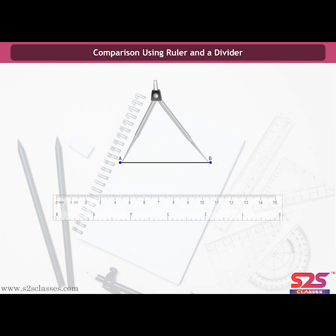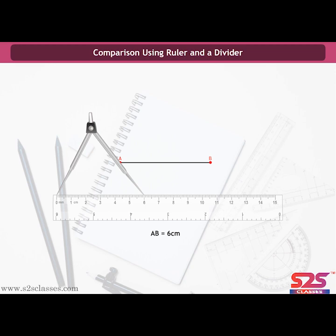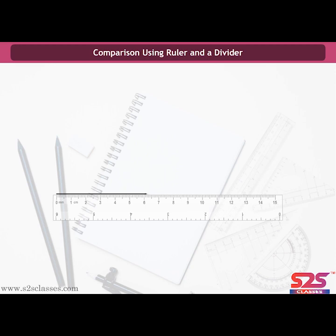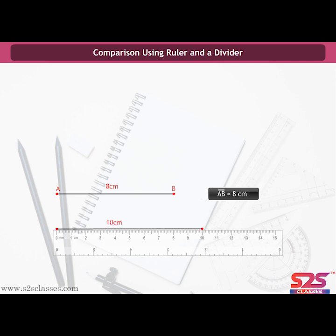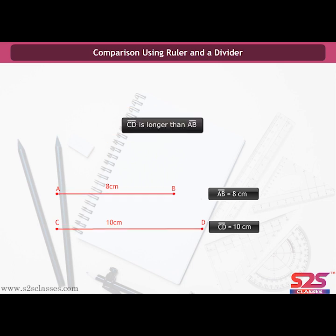To measure a line segment by a divider, open it and place the end point of one of its arms at A and the end point of the second arm at B. Now without disturbing the opening of the divider, take it and place it on the ruler. Ensure that one point of the divider is at the 0 mark of the ruler, then read the mark against the other end point. To compare using a ruler, draw a line segment of length 8 cm and mark it AB, then draw another of length 10 cm and mark it CD. Clearly, CD is longer than AB.